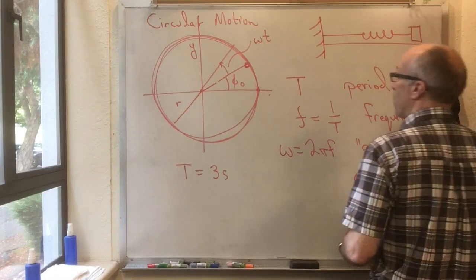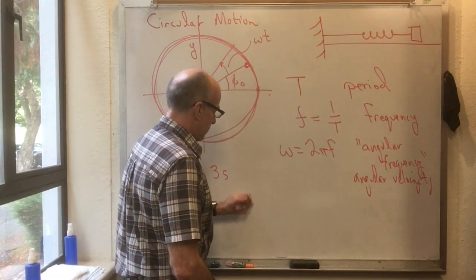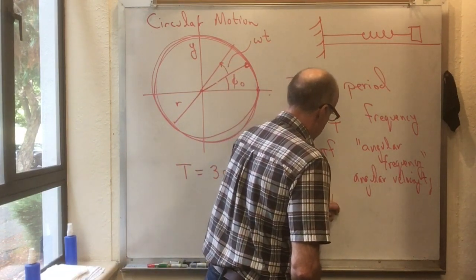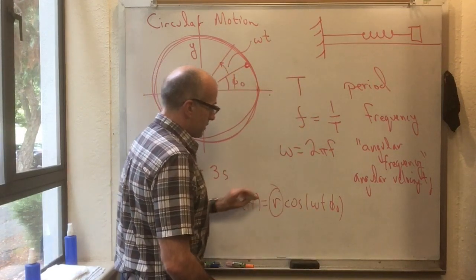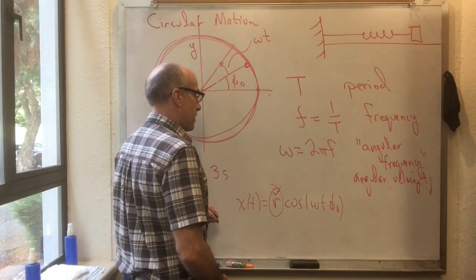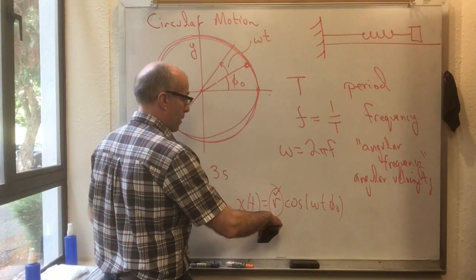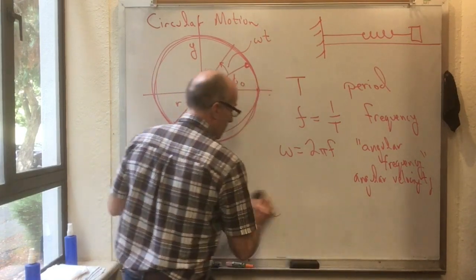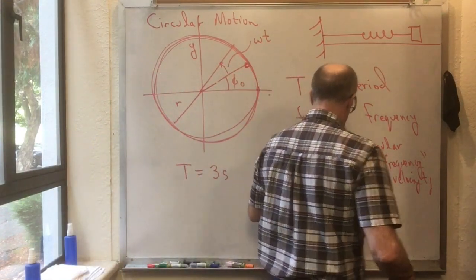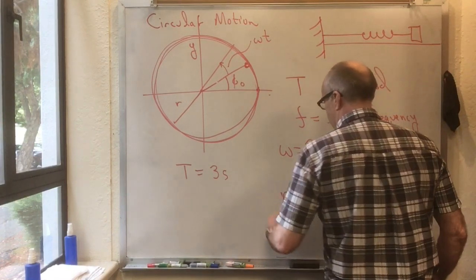Finally, we have the thing that multiplies the cosine. When we have x of t is equal to r cos omega t plus phi naught. That thing that multiplies it has a name, too. This is the maximum value that x is ever going to be, and minus that is the minimum value x is ever going to be. Because cosine goes between plus 1 and minus 1. So this is going to max out at plus r and hit its minimum at minus r. So that thing that's out in front, which here was r, is called the amplitude. And later on, you'll see that is often the letter capital A for amplitude.